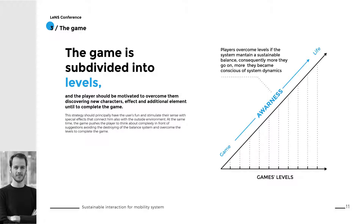The game is subdivided into levels, each comprising a quantity of suggestions. The motivation to continue in the game should be driven by fun and the curiosity to overcome levels, discovering new characters and affecting additional elements until completing the game. Players advance levels if the system maintains a sustainable balance. Consequently, the more they progress, the more they become conscious of the system dynamics. This strategy should trigger the rise of awareness in users.